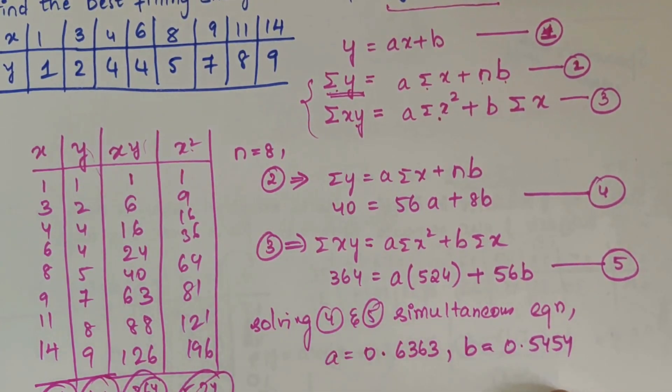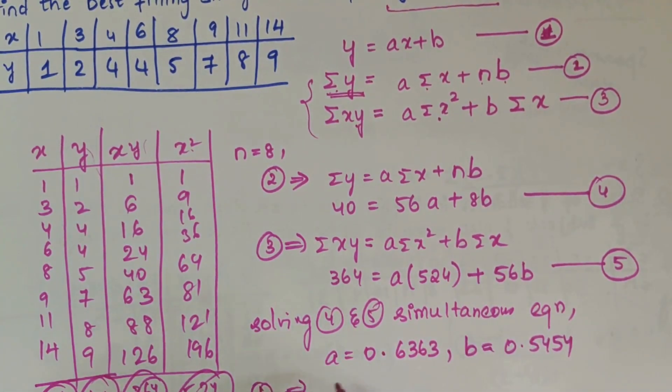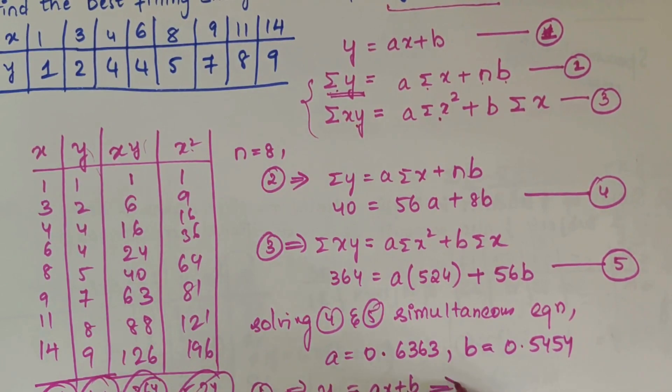Once you have got the values of a and b, substitute in the first equation. So y equals ax plus b, that is y equals 0.6363x plus 0.5454.